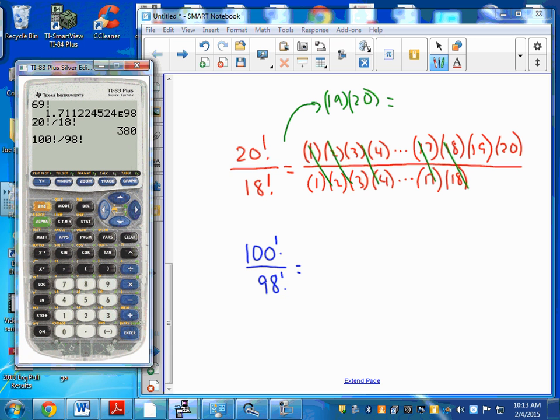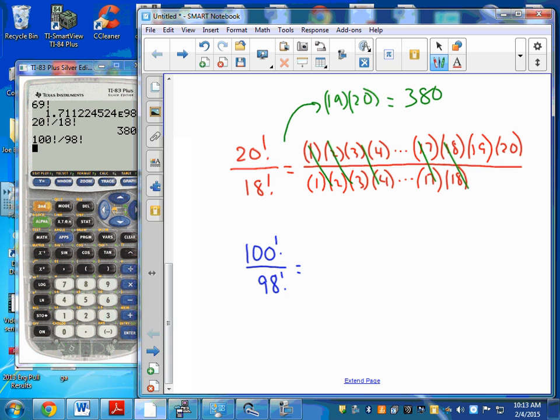The only thing I have left is 19 times 20. 19 times 20 is 380.